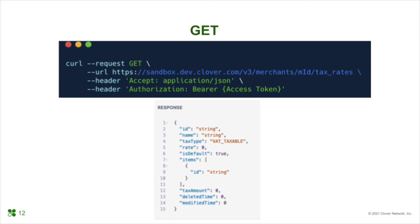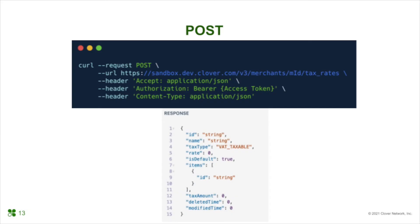Here is a GET request API call to gather all the tax rates on the merchant's account. The JSON response returns things like the tax name, the rate or the amount, and what inventory items are tied to it. An item can have multiple tax rates. A POST request API call will add a new tax rate to the merchant's account, and you can also assign what items will have this tax rate.